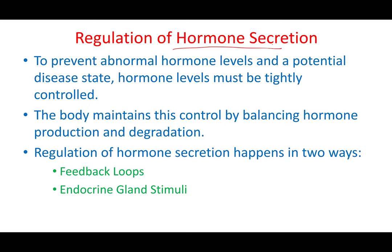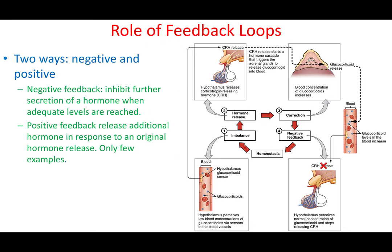We want to understand how hormone levels are regulated — in other words, why hormones are secreted and in response to what. There are feedback loops and endocrine gland stimuli. For feedback loops, this is similar to negative and positive feedbacks in homeostatic regulation. In a negative feedback, high levels of a hormone — like testosterone — will inhibit further production of that hormone.